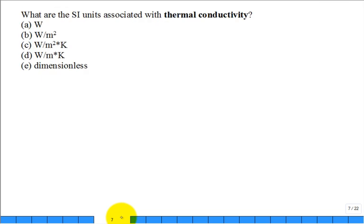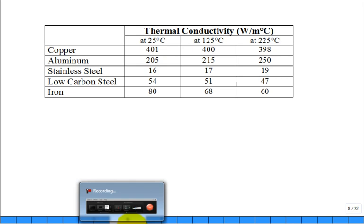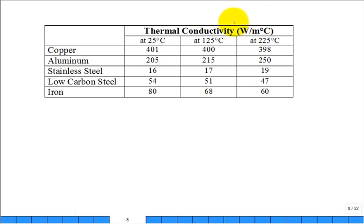We have a clicker question, though my clickers aren't working. The SI units associated with thermal conductivity are? D — watts per meter degree C. Very good.